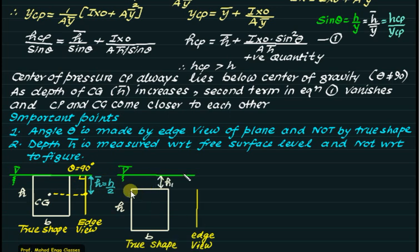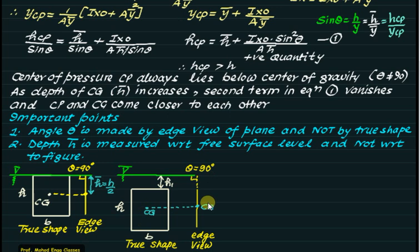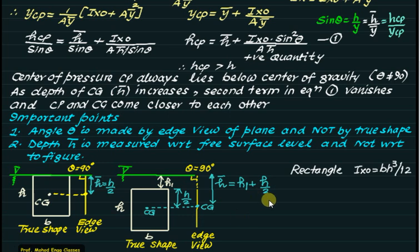For the second figure, where the top edge is submerged at depth h1 below the free surface, the edge view still makes theta = 90°. The center of gravity is projected from the true shape to the edge view. The distance from the top edge to the CG is h/2, but h-bar (measured from the free surface) equals h1 + h/2. Remember: h-bar is always measured from the free surface, not from the body geometry.